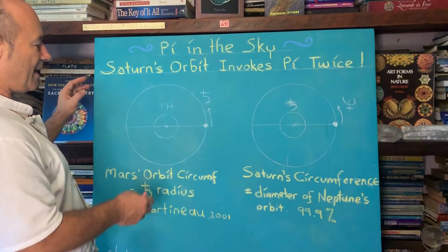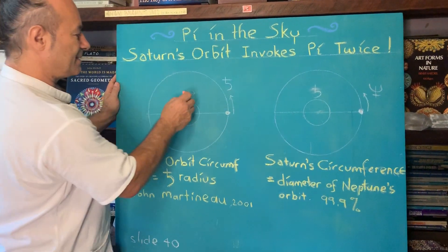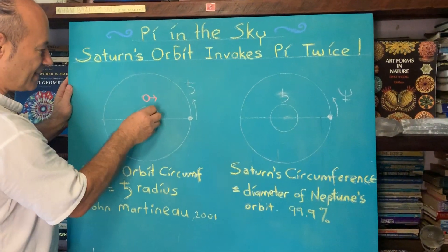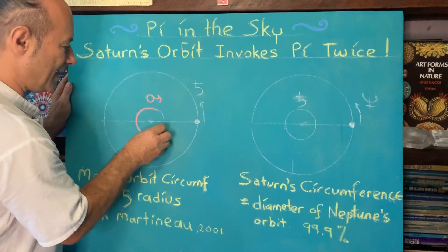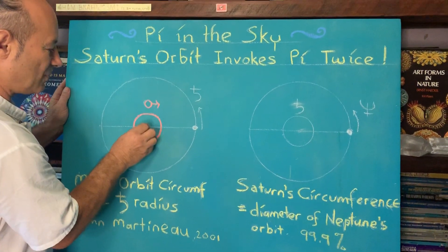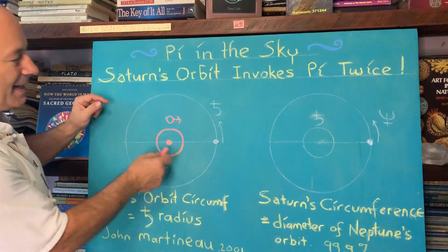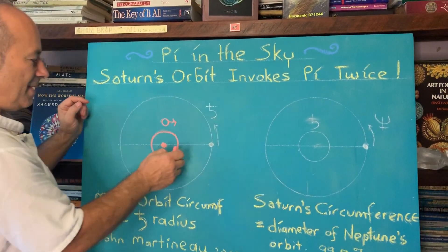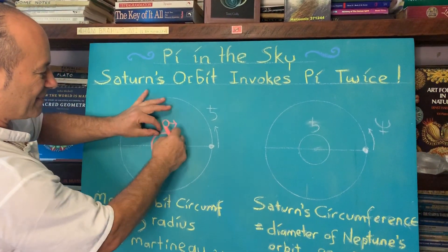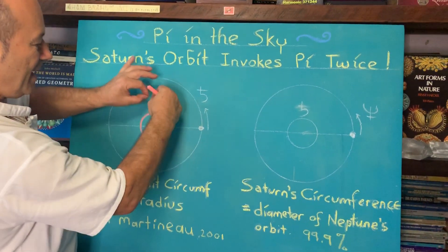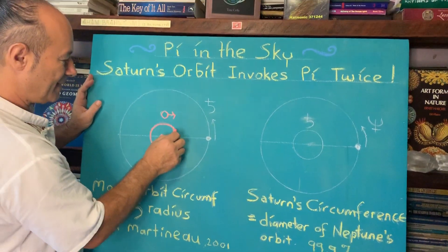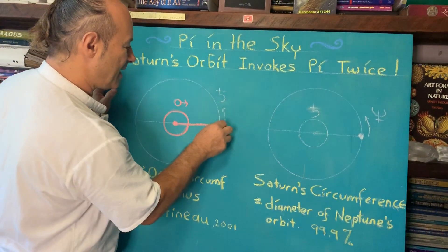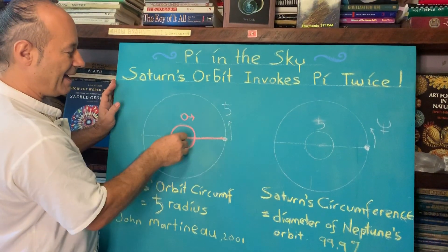I'm going to start off with Mars. Here's the symbol for Mars, which we all know as the male symbol like an arrow. So this is the orbit of Mars going around the Sun — it has a certain circumference or length. What we're going to do is open up this circumference like it was a shoelace or a string, and that distance is going to become the radius for Saturn.